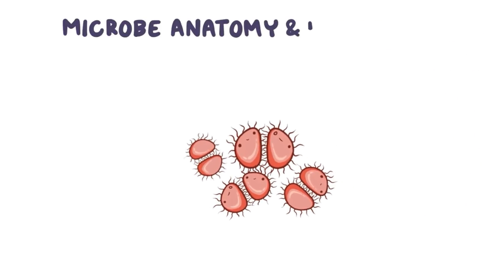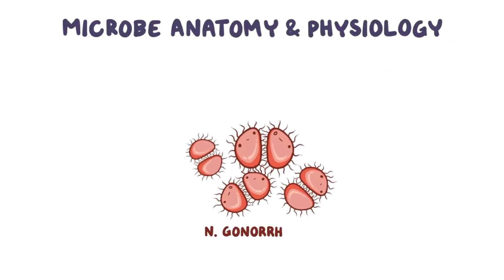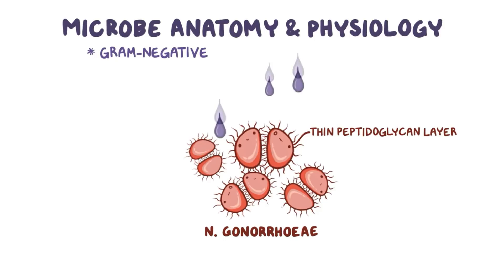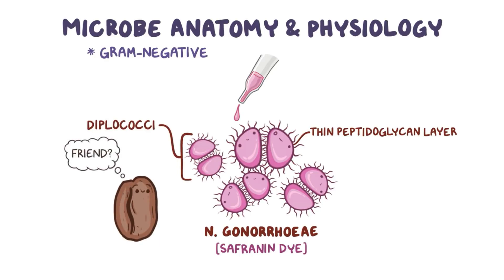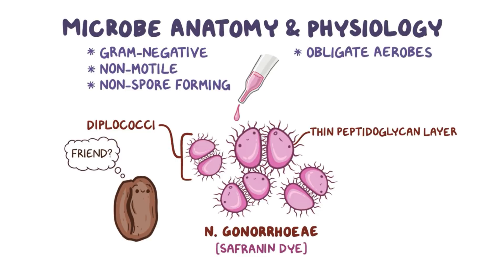Now a little bit of microbe anatomy and physiology. N. gonorrhoeae is a gram-negative bacterium because its cell wall has a thin peptidoglycan layer and so it doesn't retain the purple dye used during gram staining. Instead, like any other gram-negative bacteria, N. gonorrhoeae stains pink with safranin dye. N. gonorrhoeae typically lives in pairs called diplococci, stacked side to side so the pair looks like a coffee bean. They're also non-motile, non-spore forming, and obligate aerobes, which means that they absolutely need oxygen to grow.